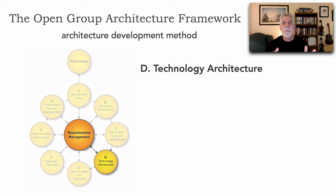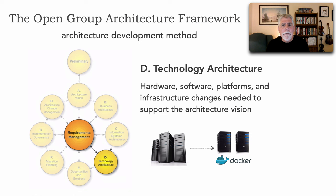Then we have Phase D, the Technology Architecture. This is where we specify all the things like the hardware, software, additional platforms, and infrastructure that needs to change in order to support our architecture vision.